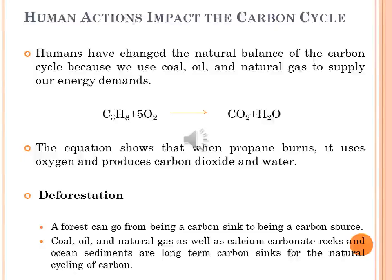Humans have changed the natural balance of the carbon cycle, primarily through the use of coal, oil and natural gas to supply energy demands. Fossil fuels are a sink for carbon dioxide when they form, but they are a source of carbon dioxide when they are burned.